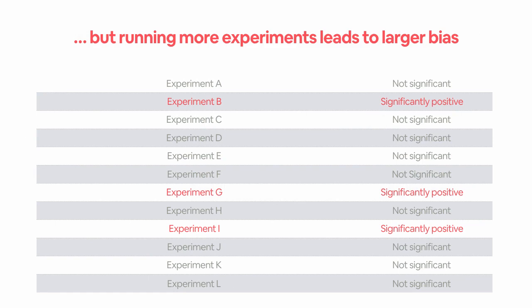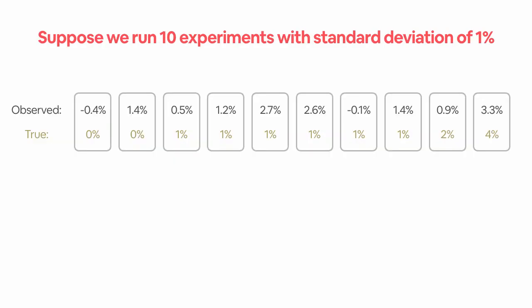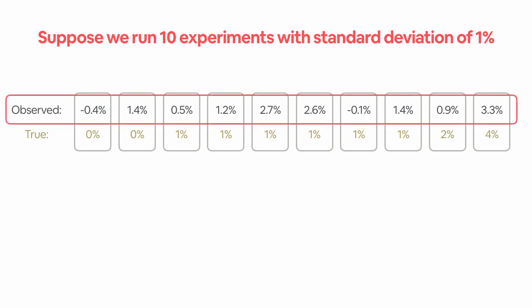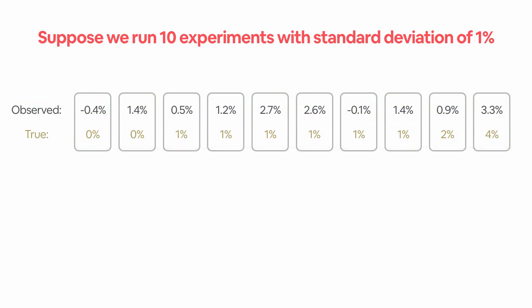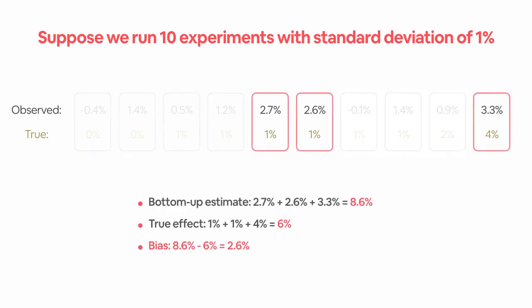But if we run many experiments, it's very likely to overestimate the total effect from successful experiments. Here is an example showing that the selection process introduces bias. Suppose that we run 10 experiments. The black numbers are the observed changes in a metric from 10 experiments, and the gold numbers are the true effects in the metric. Suppose that we use significance level 0.05, so the cutoff is around 2%. If we select the three experiments with metrics larger than 2%, the bottom-up estimate is 8.6%, where the true effect is 6%. So in this case, the bias is 2.6%.